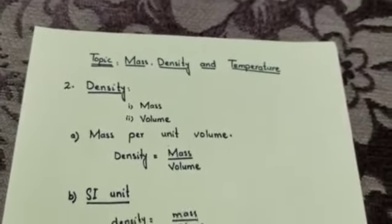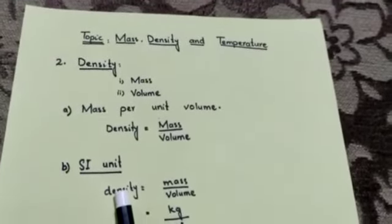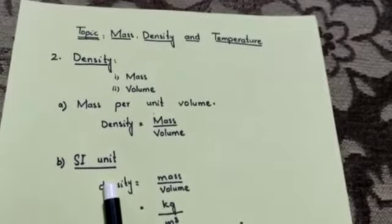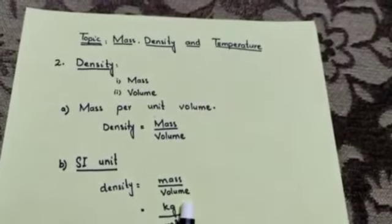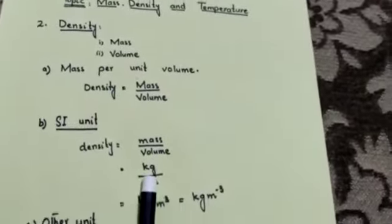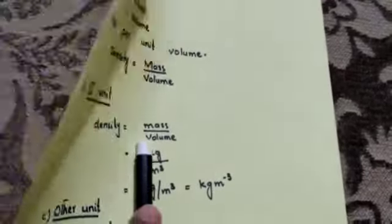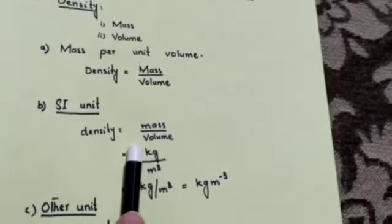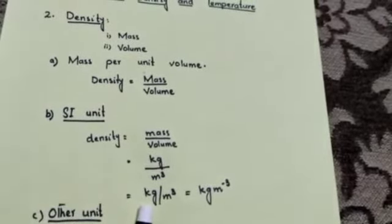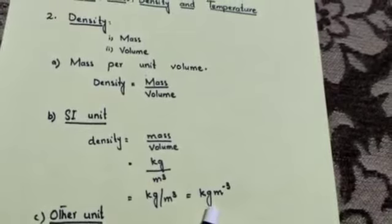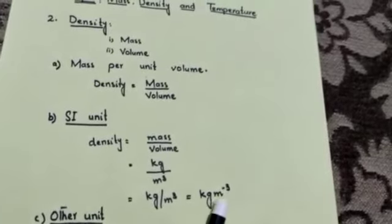Using this formula, we can also find out the SI unit. The SI unit of density is kilogram per meter cube. Density is equal to mass divided by volume; mass has the SI unit kilogram and volume has the SI unit meter cube. So the SI unit of density is kilogram per meter cube, written as kg/m³ or equivalently as kg·m⁻³.